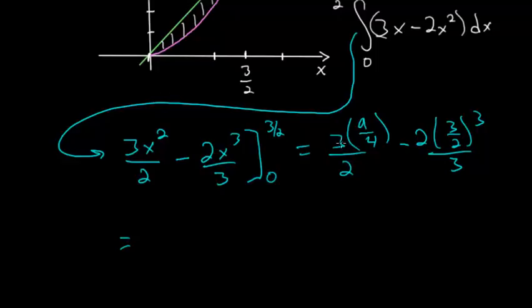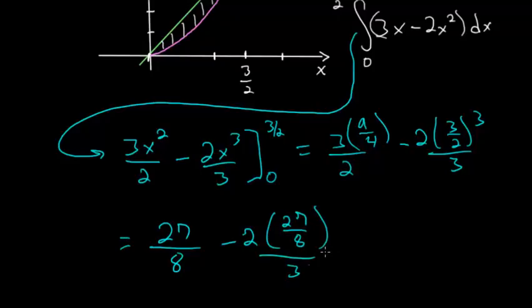And this is equal to 3 times 9 is 27. And we can put the 4 in the bottom so that we have 8 minus 3 over 2 to the third power is simply 27 over 8. That's divided by 3. So 27 eighths minus 2 times 27 is 54. And we can put the 8 in the denominator so that we have over 24.